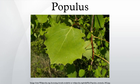The fruit is a 2 to 4 valve dehiscent capsule, green to reddish-brown, maturing in midsummer, containing numerous minute light-brown seeds surrounded by tufts of long, soft, white hairs which aid wind dispersal.